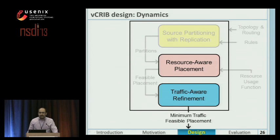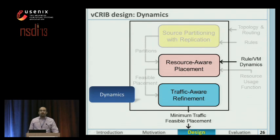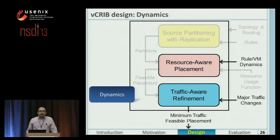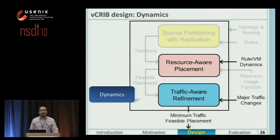To handle dynamics such as rule changes and VM additions, we run the resource-aware placement algorithm if they make a feasible solution infeasible. But for frequent dynamics such as traffic changes and most VM migrations that keep the solution feasible, we don't need to rerun resource-aware placement — we just run the refinement algorithm. And this is one of the advantages of having a two-step approach.